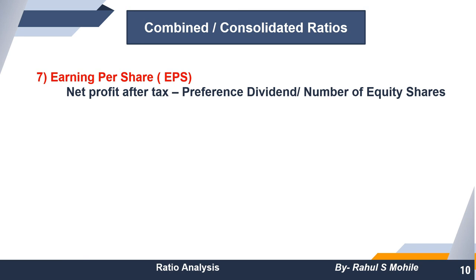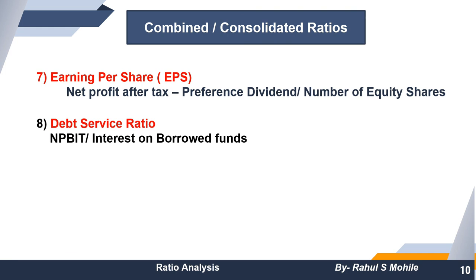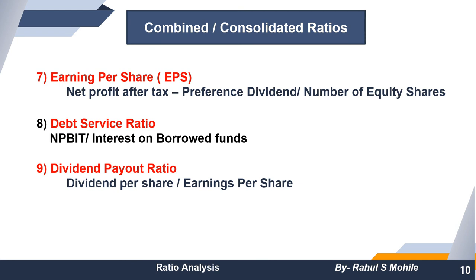Next is EPS (earning per share). This is very important because whenever a shareholder invests, they want to know how much return they get per share. The formula is net profit after tax minus preference dividend divided by number of equity shares. The difference between return on equity capital and EPS: in return on equity capital the denominator is paid-up equity share capital, while in EPS the denominator is number of equity shares. Next is debt service ratio: NPBIT divided by interest on borrowed funds.